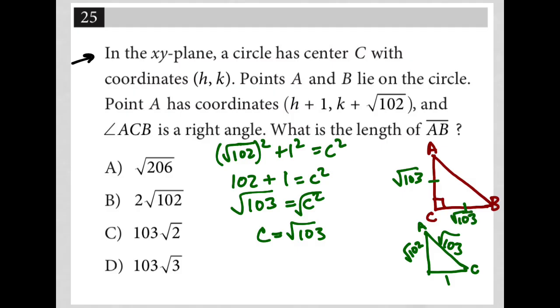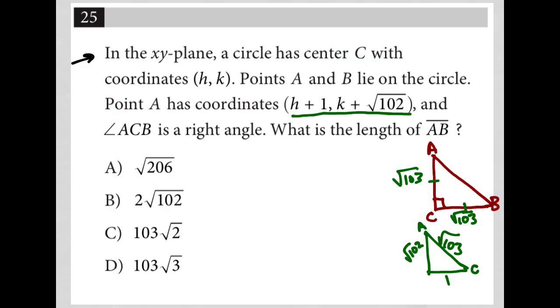So hopefully that makes sense from the circle that I had up there. We know that AC and CB are the exact same length, and we know that they are, we basically used this, H plus 1 and K plus root 102 to figure out what the lengths of the separate right triangles were that created those radii. So now, let me erase this for more space. I'm just looking for the length of AB. So I'm going to do Pythagorean theorem again. In fact, I don't need to, because this is a special right triangle.